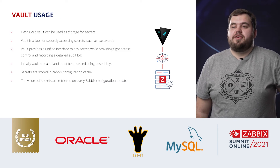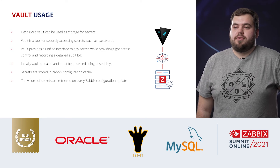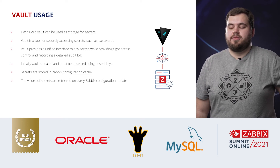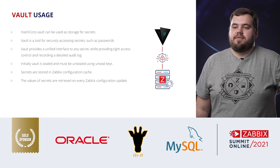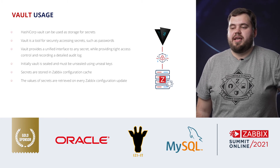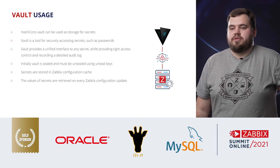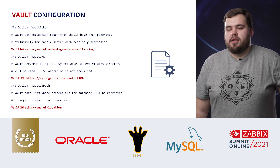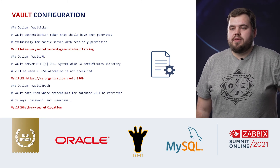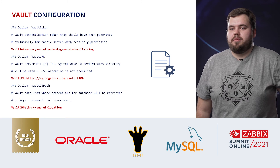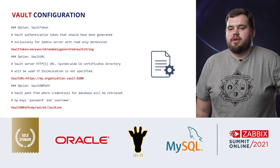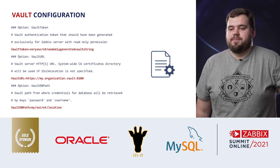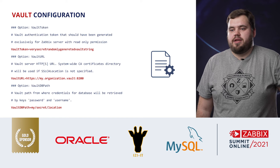Another great feature is HashiCorp Vault, which is an industry-standard tool for saving secrets and it works pretty easily from Zabbix. You add secrets to the vault and then Zabbix configuration cache accesses them every time it's updated — usually every one or two minutes depending on your settings. The vault configuration is saved in the server configuration: you enter your vault token, your vault URL — which should be HTTPS — and add the path to the database. Pretty simple configuration — just set it up and use the vault.